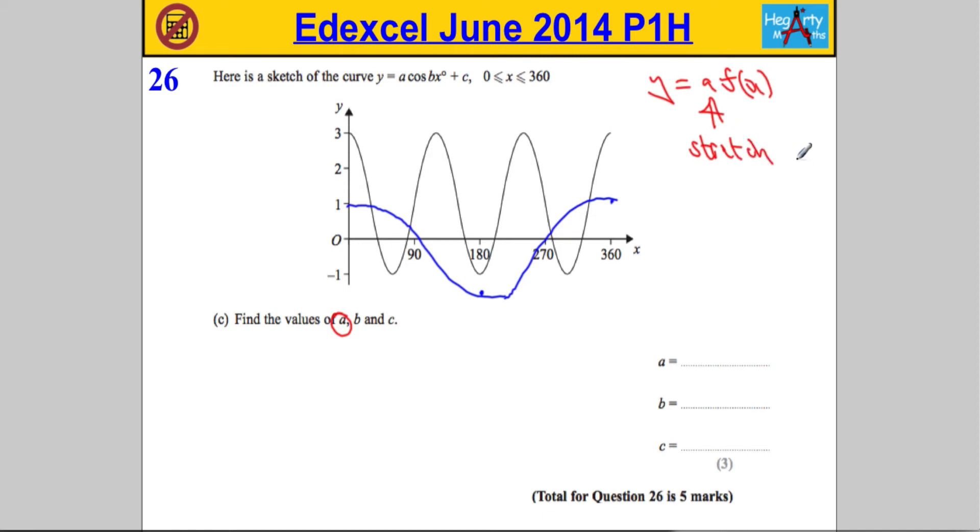So let's have a look. The original function goes between minus one and one, so essentially the height of y equals cos x is two. Let's have a look at what we've got now. It goes from minus one up to three, from minus one up to three, so that means it's now four.